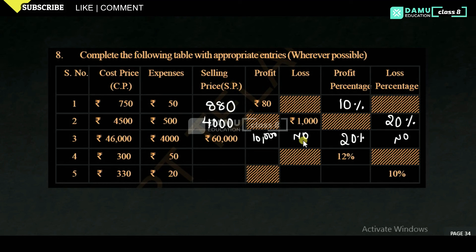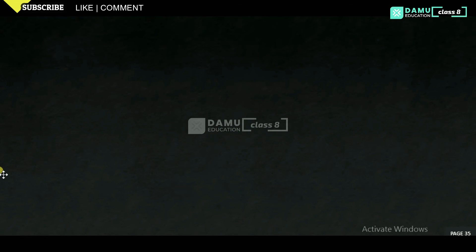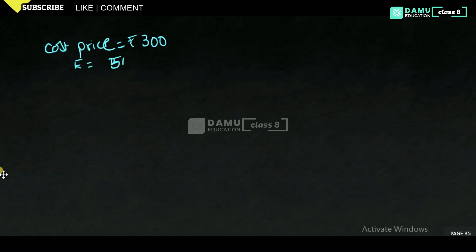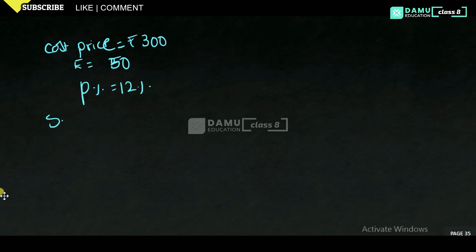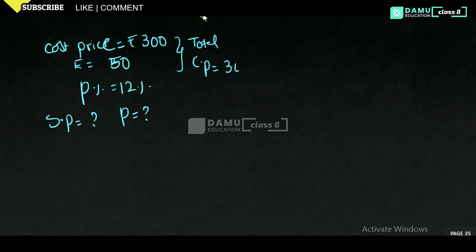Our fourth problem: cost price is given as 300 rupees and expenses are 50 rupees, so total cost price is 350 rupees. Profit percentage given is 12%. We have to find selling price and profit.